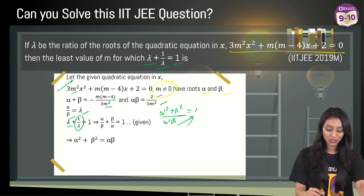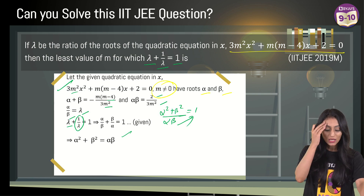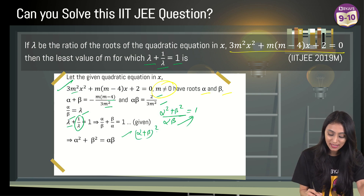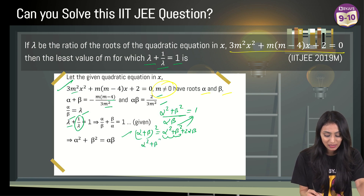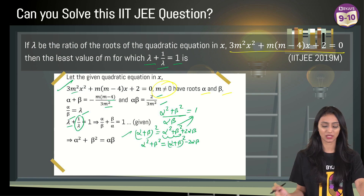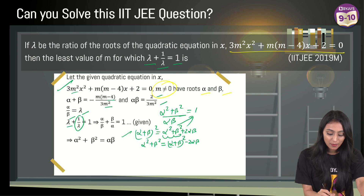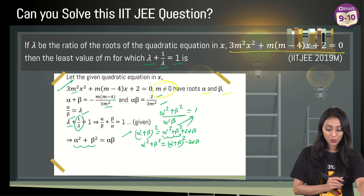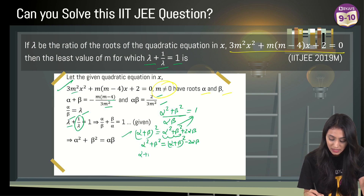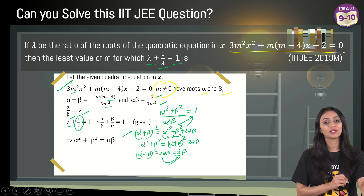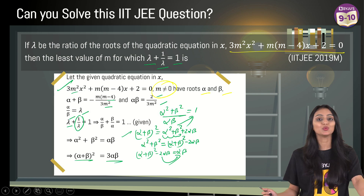We know that (alpha + beta)² = alpha² + beta² + 2·alpha·beta, so alpha² + beta² = (alpha + beta)² − 2·alpha·beta. Substituting this into our equation: (alpha + beta)² − 2·alpha·beta = alpha·beta. Bringing the 2·alpha·beta to the other side gives us (alpha + beta)² = 3·alpha·beta.